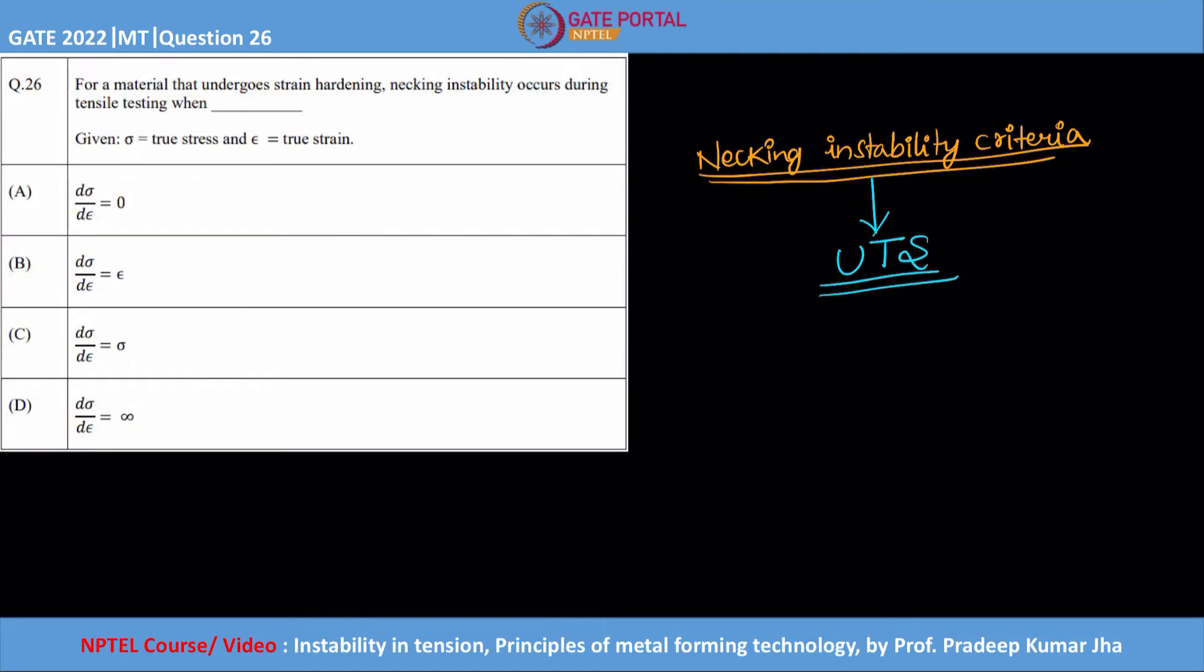the UTS point. And it is nothing but dσ/dε is equal to σ. This is called the necking instability criteria. And of course, from this we can deduce more and more relations. One of that is ε is equal to n. How can we do